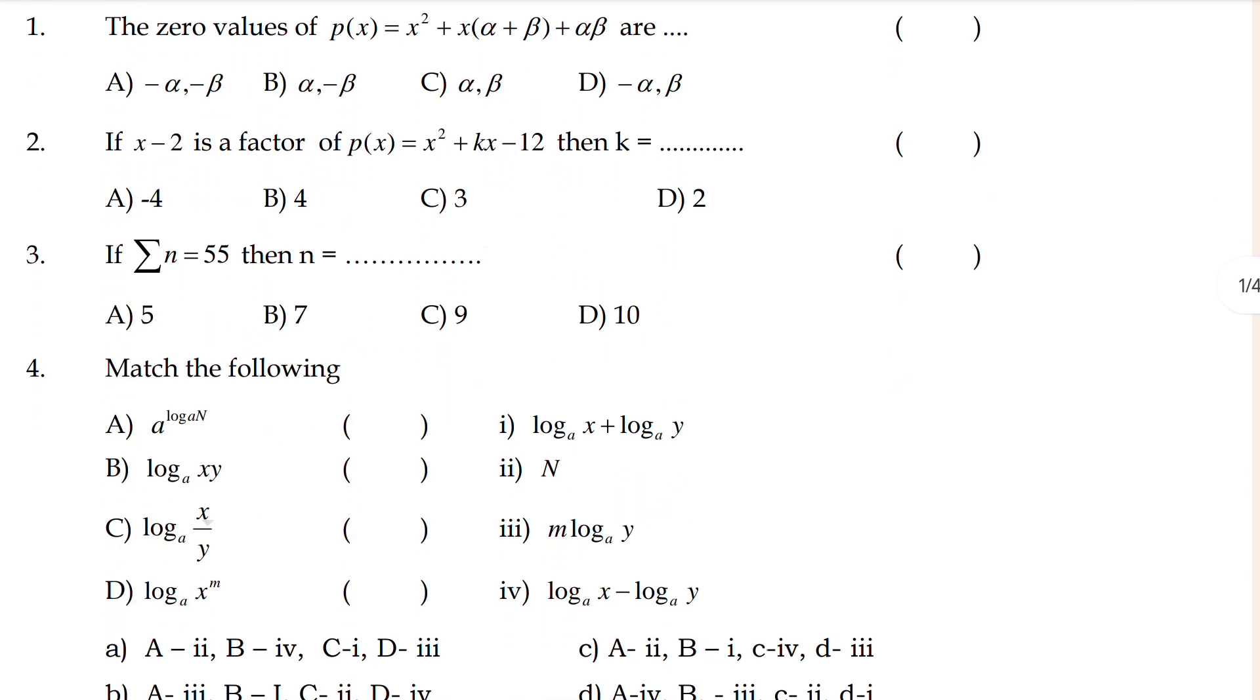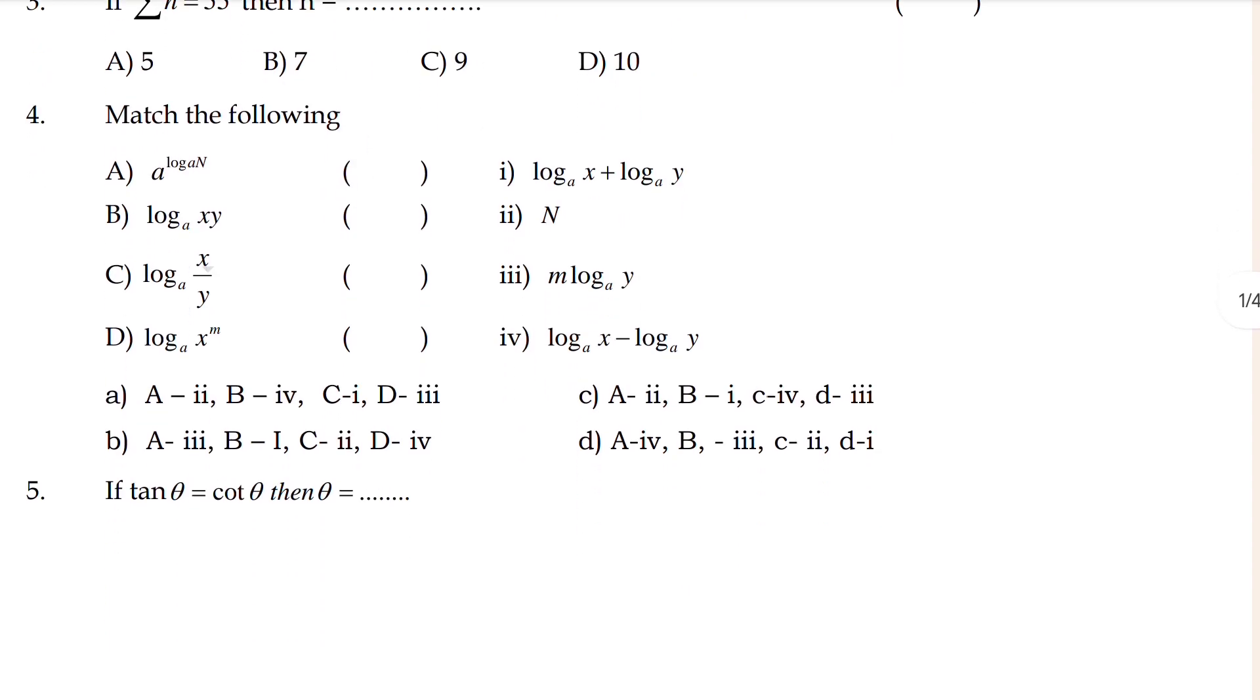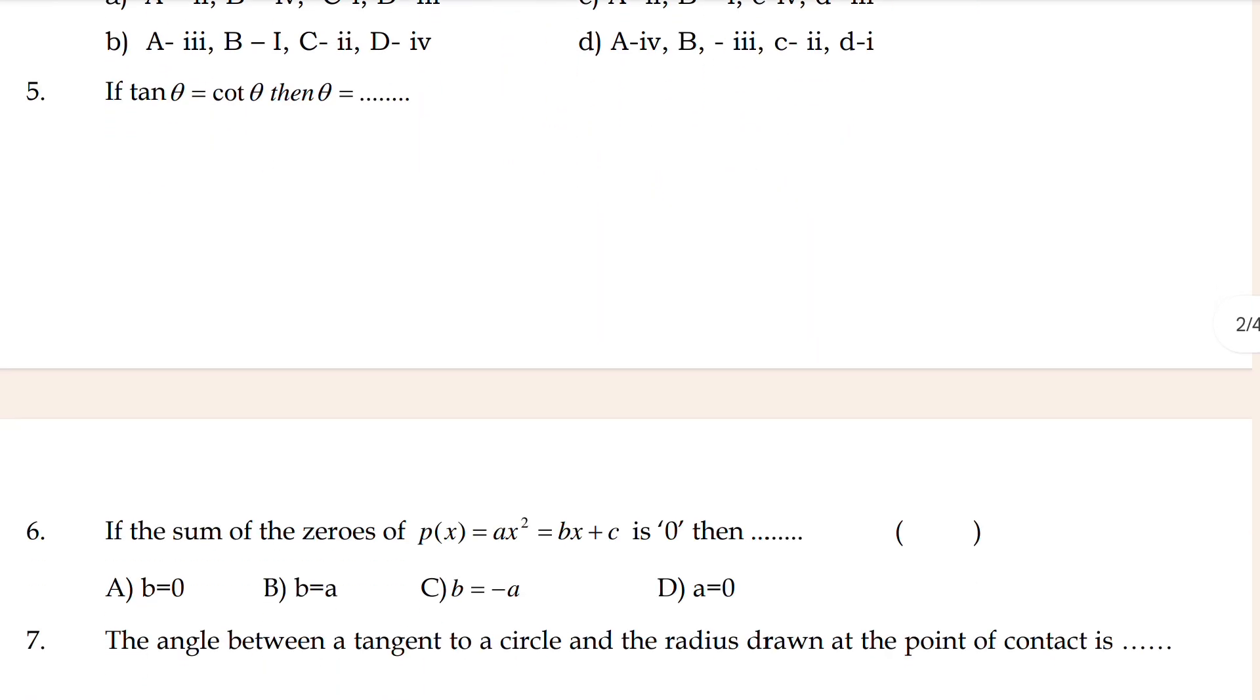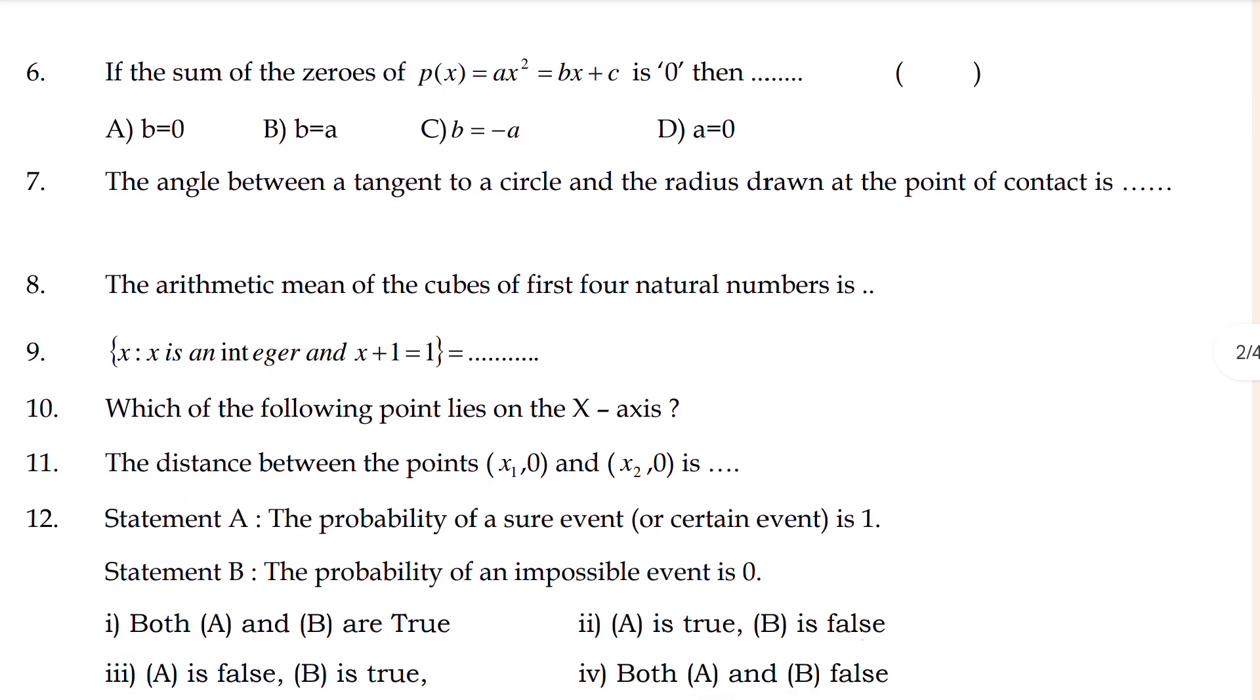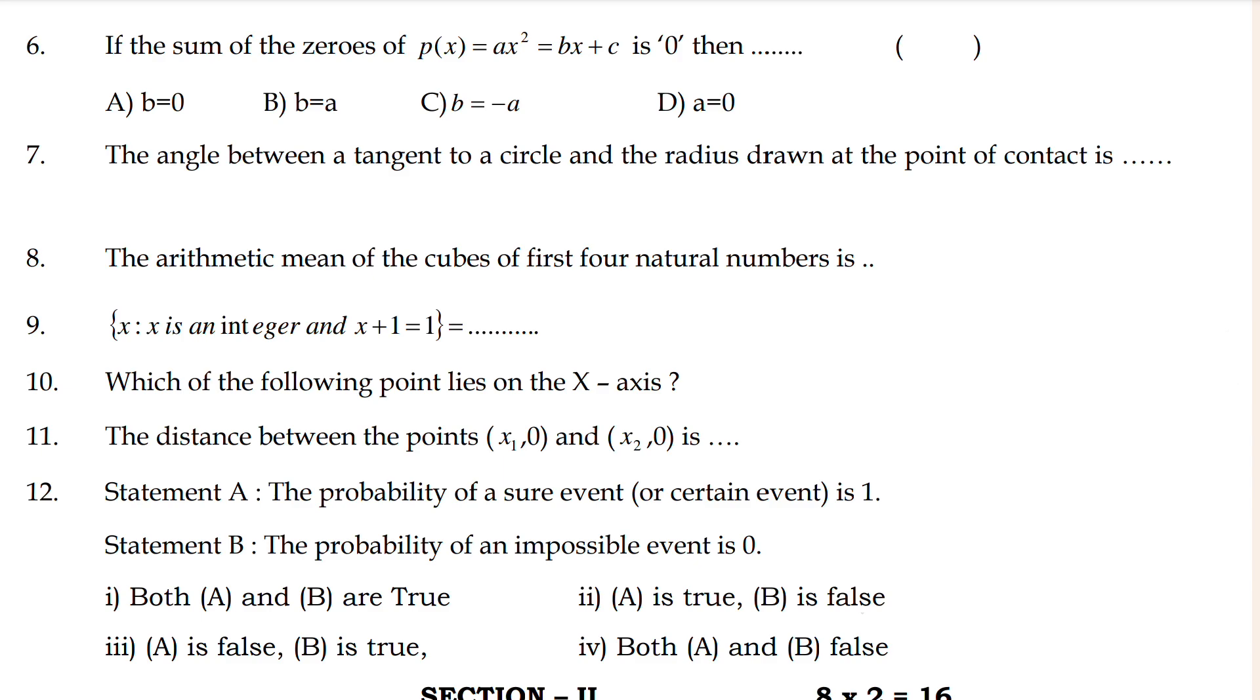Here you can see this is MCQ questions, multiple choice questions. In 20 marks there are multiple choice questions only. I'll tell you some questions that are very important - just mark those questions. Question 6 and Question 8 are important. Question 8 asks to find the arithmetic mean of first four natural numbers.